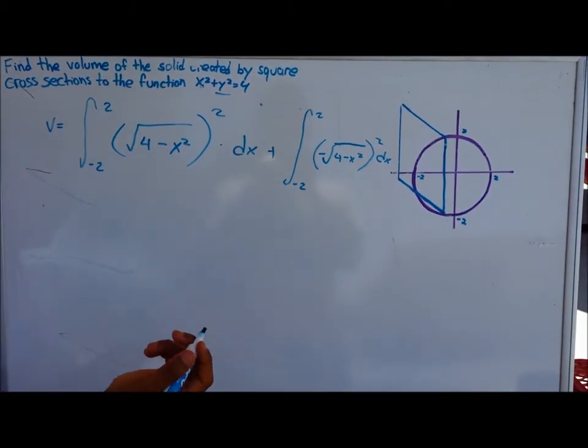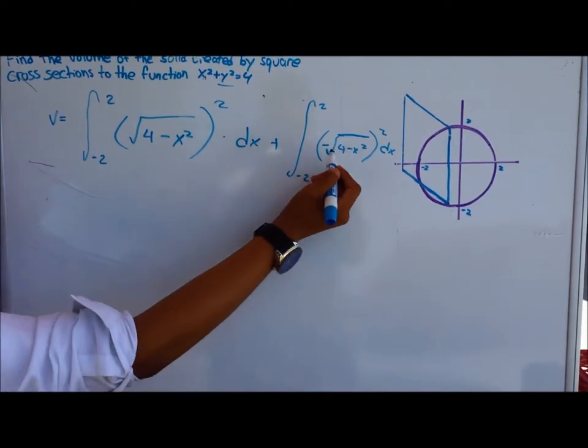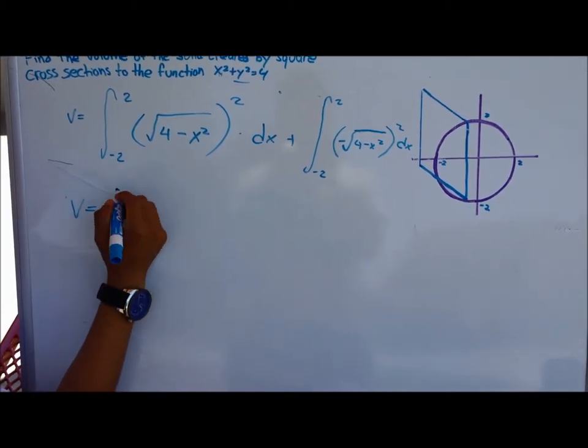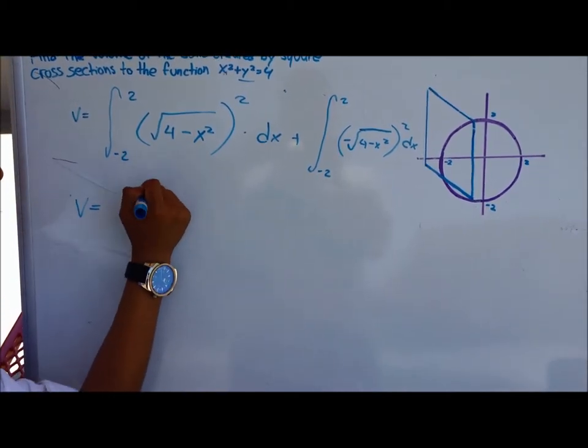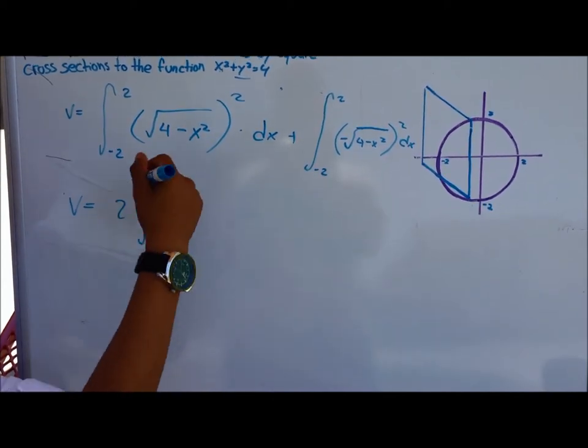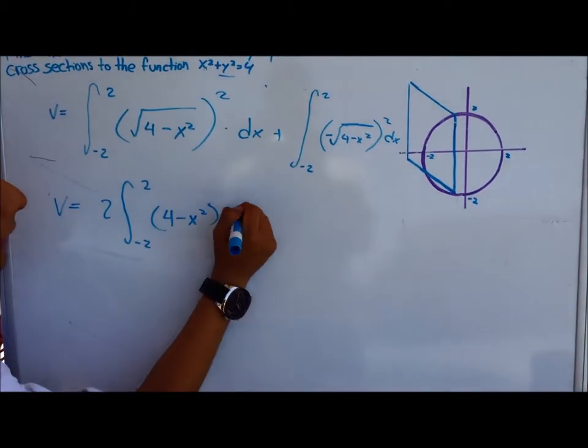So the cool thing about this function is that we have a radical and a square in both sides, so therefore they would cancel each other out. So you would be left off with 2 times the integral of negative 2 to 2 of 4 minus x squared quantity dx.